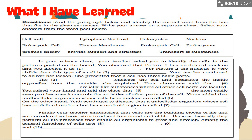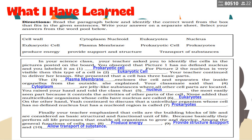What I Have Learned: choose your answers from the box and fill in the numbers. The answers are: number one — prokaryotic cell; two — eukaryotic; three — plasma membrane; four — cytoplasm; five — nucleus; six — eukaryotes; seven — prokaryotes; eight — produce energy; nine — provide structure and support; ten — allow transport of substances.